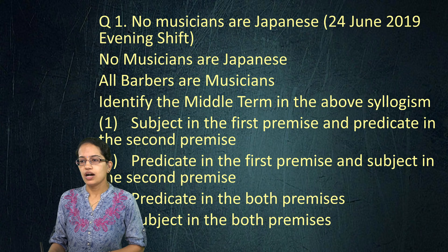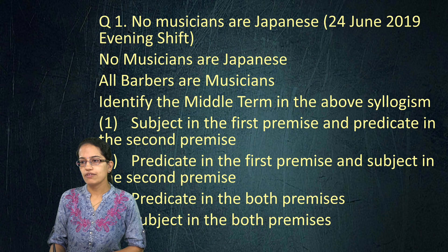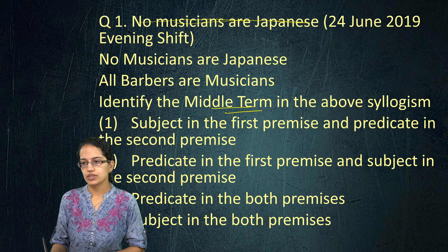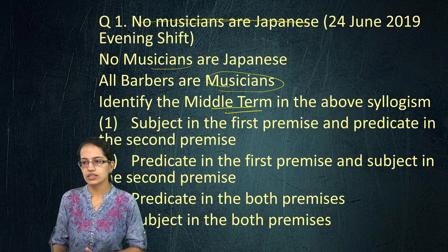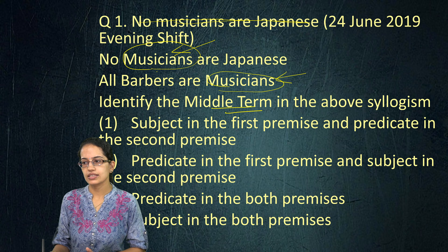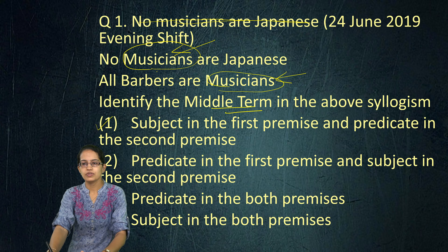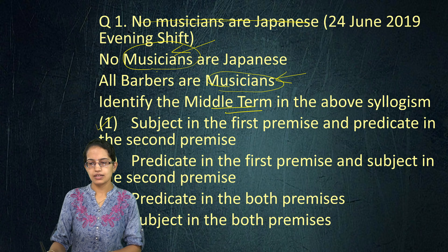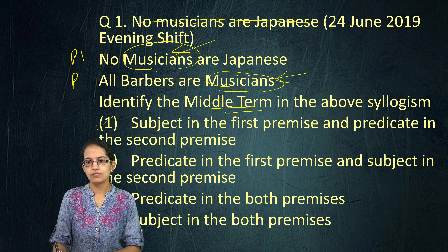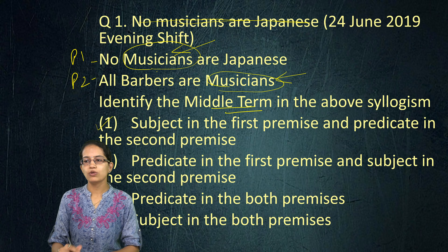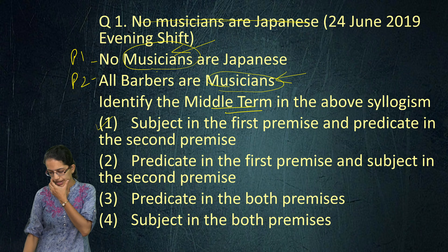Now here the question says you have to find out which of the following are the middle terms. Middle term is what? The middle term is 'musician' because it is repeated twice — in the first case it is the subject and in the second case it is the predicate. So you have subject in the first premise and predicate in the second premise. You have to find out where what is applied.